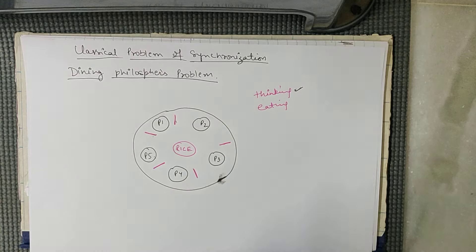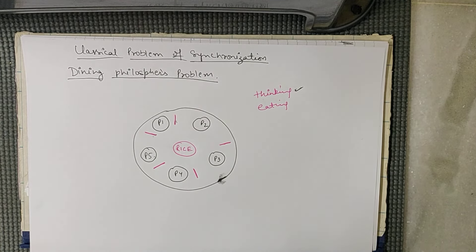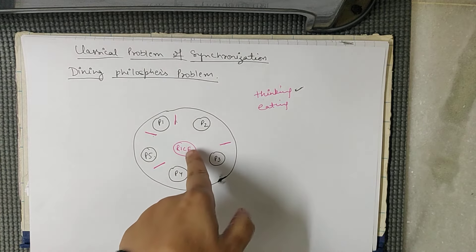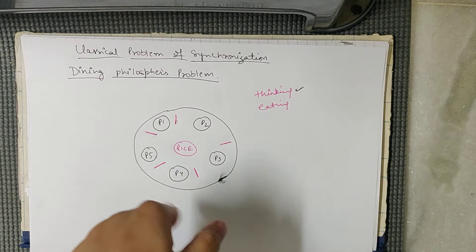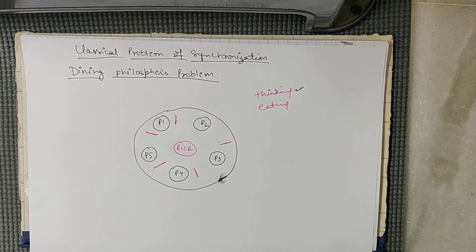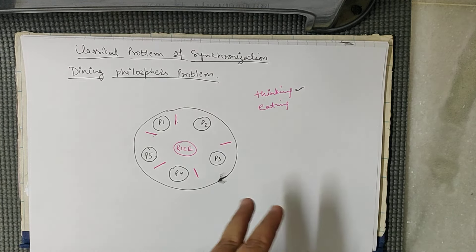This problem is the Dining Philosophers Problem. If we relate this to the computer, this is our shared resource and P1, P2, P3, P4 are our processes, and these all processes can't access the shared variable or shared resource at the same time.